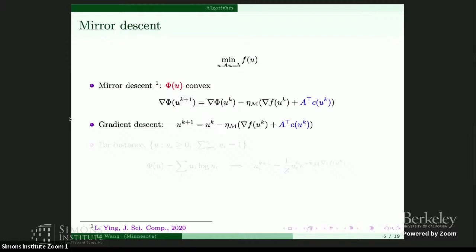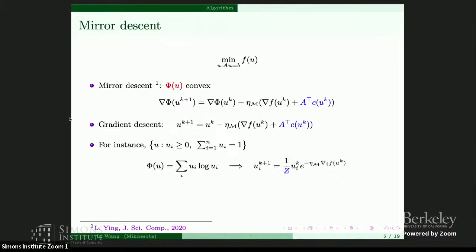For the simplex constraint, we only have one constraint — the sum of u equals one — so we just need to find a scalar constant c. In this case, the appropriate choice of phi is the entropy functional. If you plug this into the mirror descent, the update formula you get encodes the computation of c in a normalizing constant z. So in this case it's very easy to obtain c: you just normalize by the constant z.